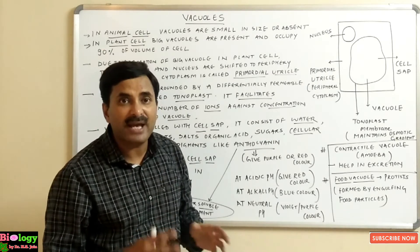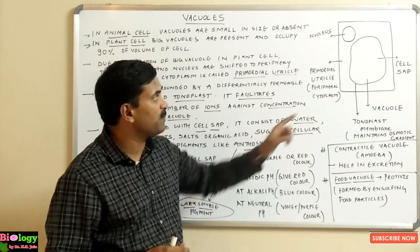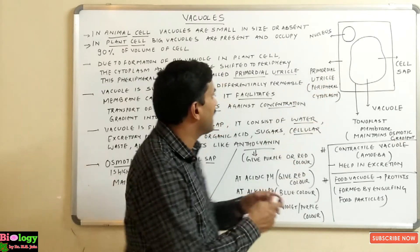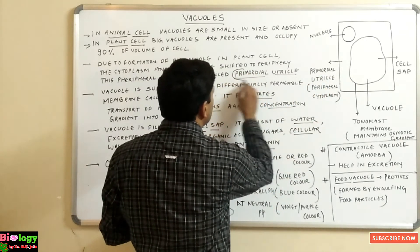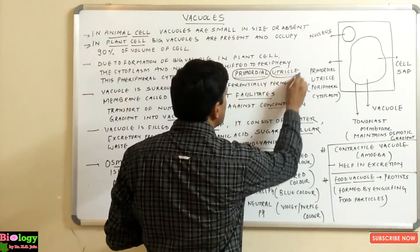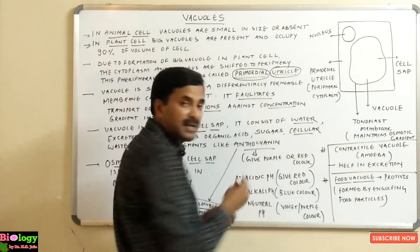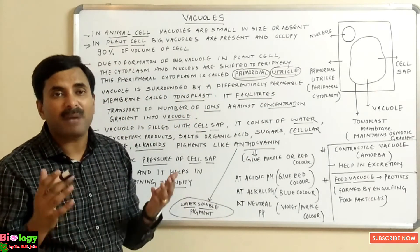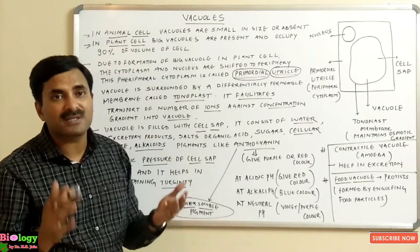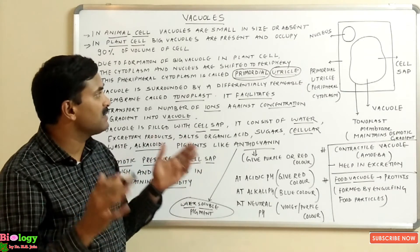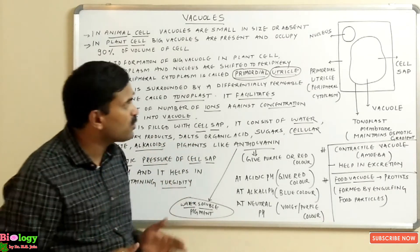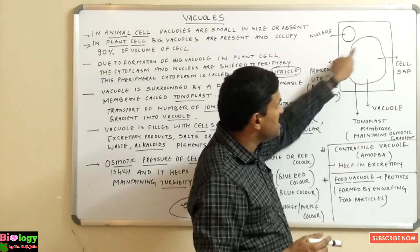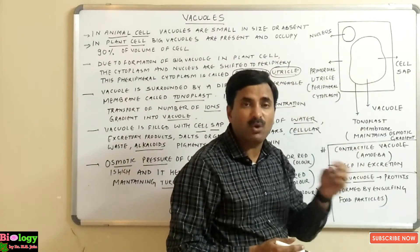This peripheral cytoplasm is called the primordial utricle. It is very important and is asked in the medical entrance examination — what do you mean by the primordial utricle? The primordial utricle is simply the peripheral cytoplasm.